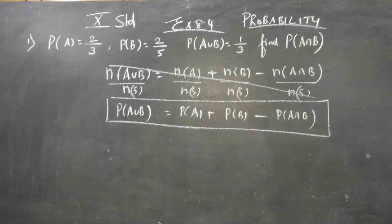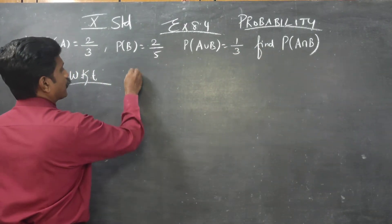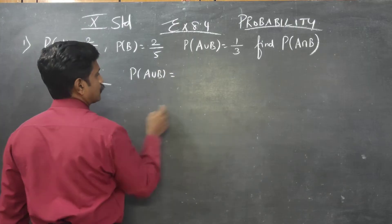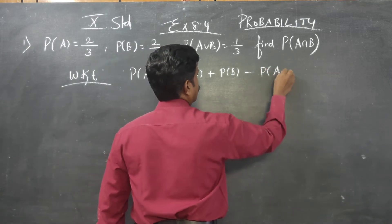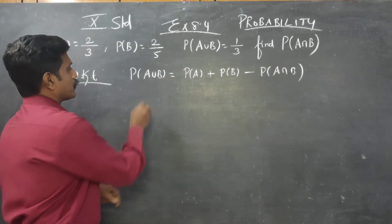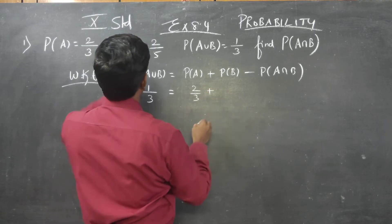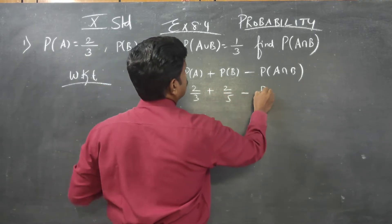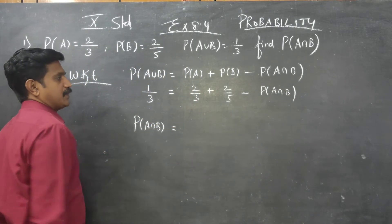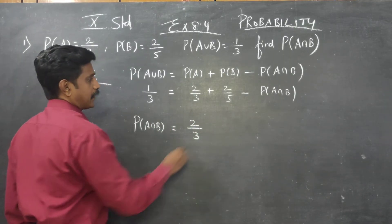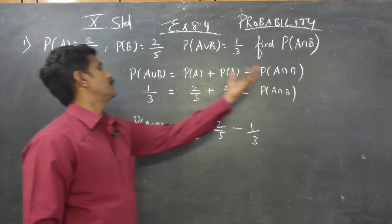To find P of A intersection B, we know that probability of A union B equals probability of A plus probability of B minus probability of A intersection B. Substituting: 1 by 3 is equal to 2 by 3 plus 2 by 5 minus probability of A intersection B.